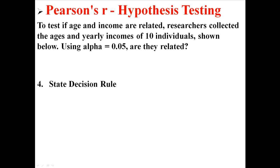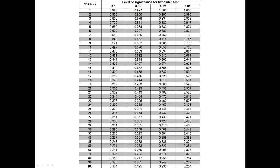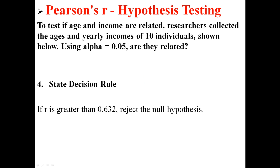So from that we will take our decision rule. And for that we have our own special R table. There are tables for everything. So using our alpha of 0.05 and our degrees of freedom of 8, we're going to find a critical value of 0.632. So that means that if the R we calculate is greater than 0.632, we're going to reject the null hypothesis.